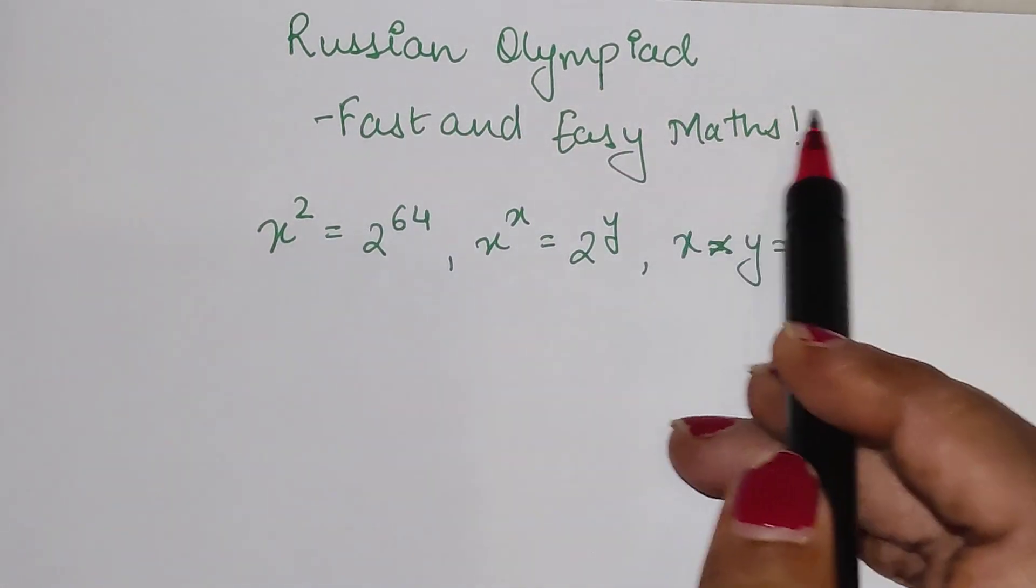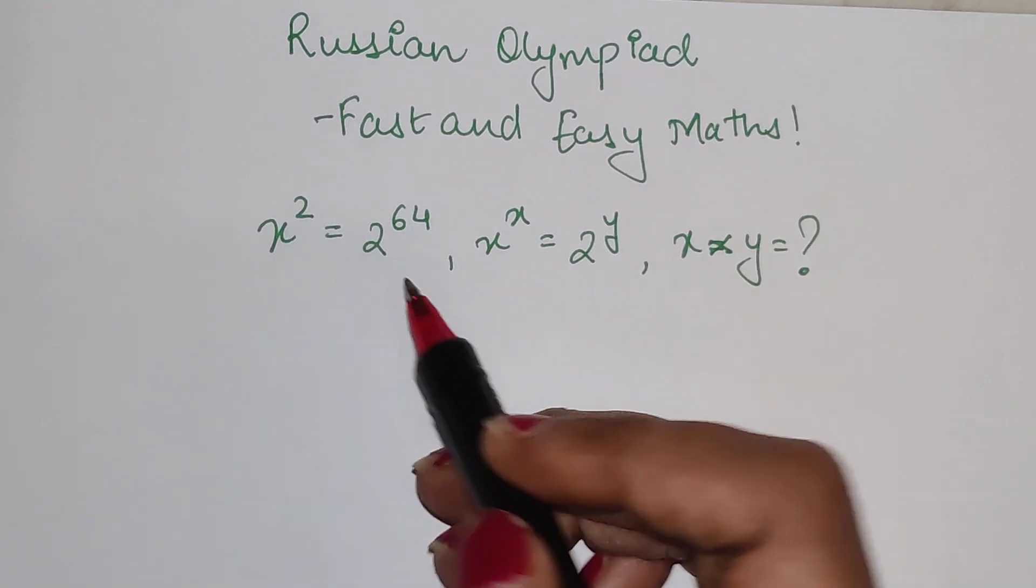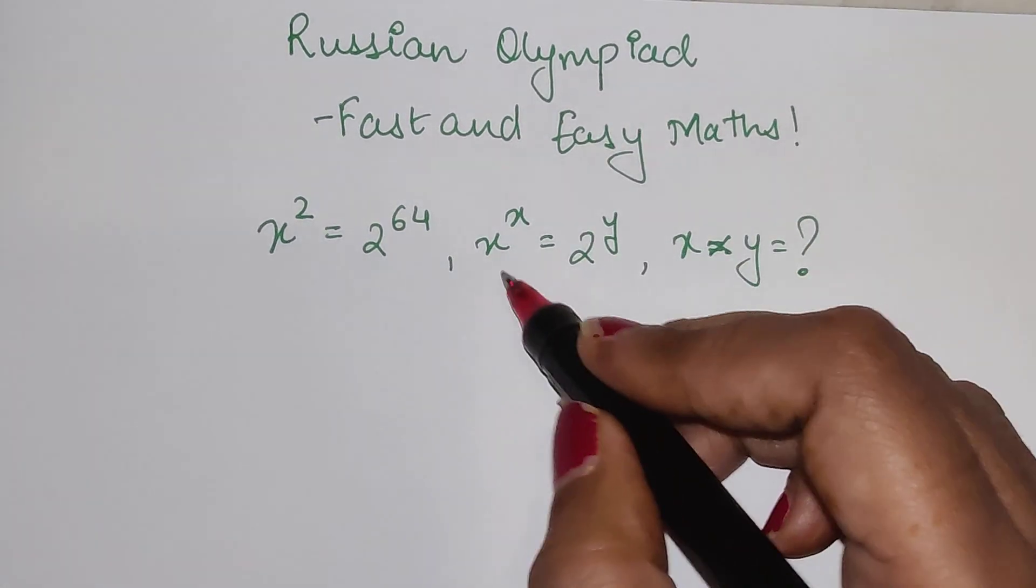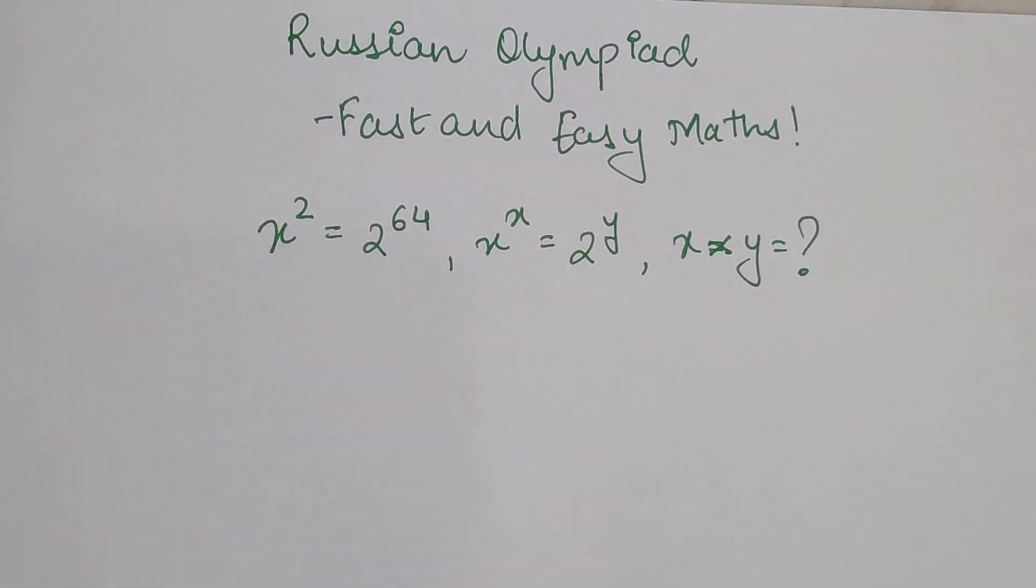Welcome everyone. Today we are solving a Russian Olympiad question where they have given us x² = 2^64, x^x = 2^y, and we need to find the product of x times y.